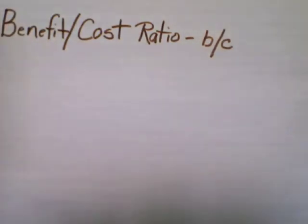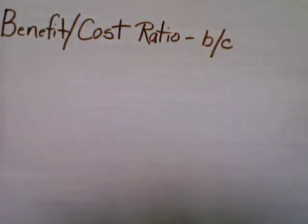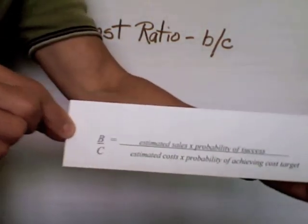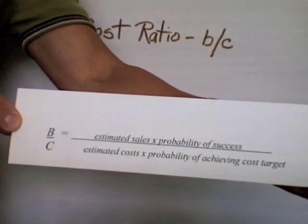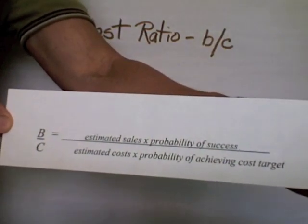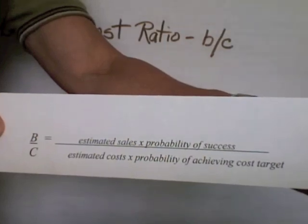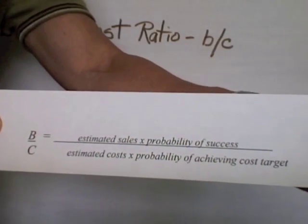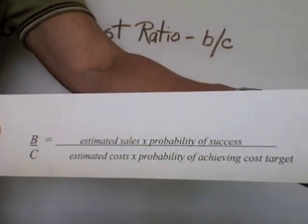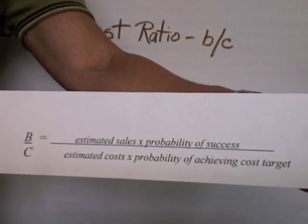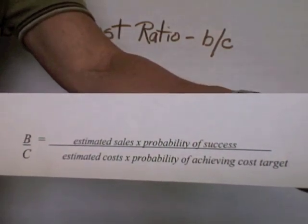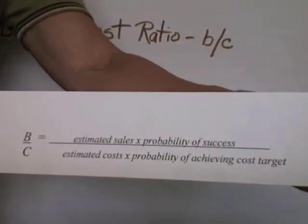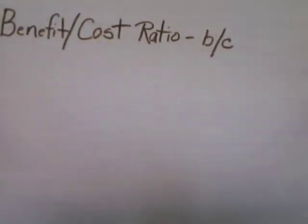As you can see, it is a ratio benefit divided by cost. It looks like this. The benefit is the estimated sales that would be made in this particular project multiplied by the probability that we will succeed in hitting that number. The cost is the estimated costs multiplied by the probability of achieving the cost target.